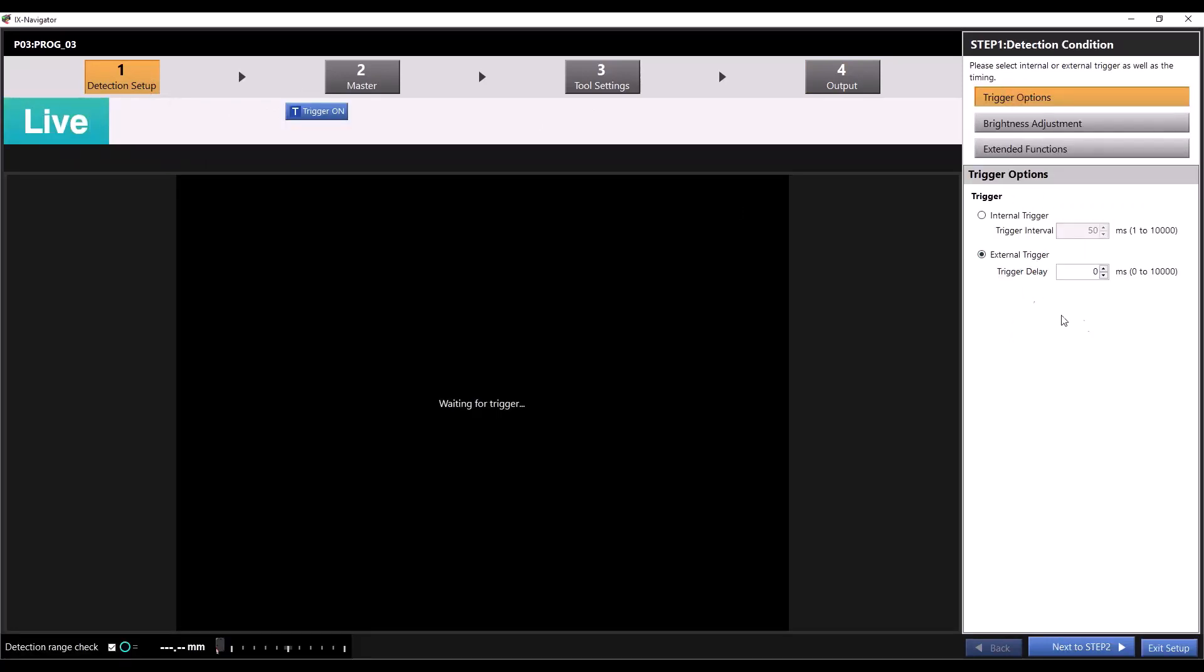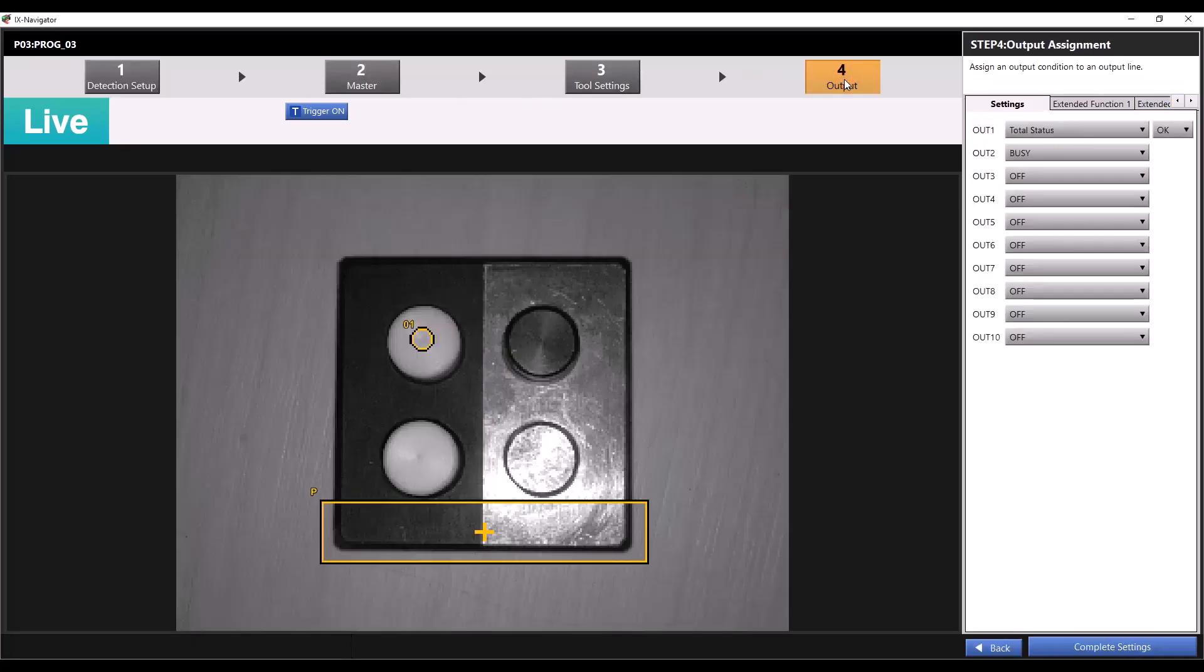Under trigger options, you must select external trigger for the iX to accept a discrete trigger signal. This is all we have to set for our input. I've already set up my master image and my tools, so next we'll go through to step 4 where we'll assign our outputs.